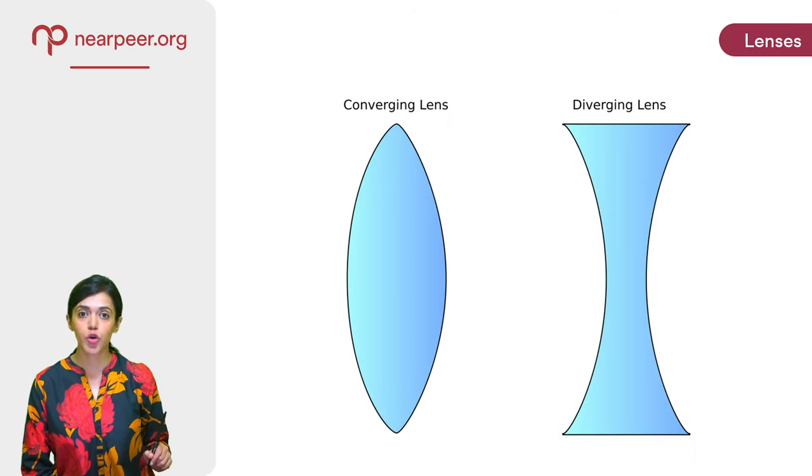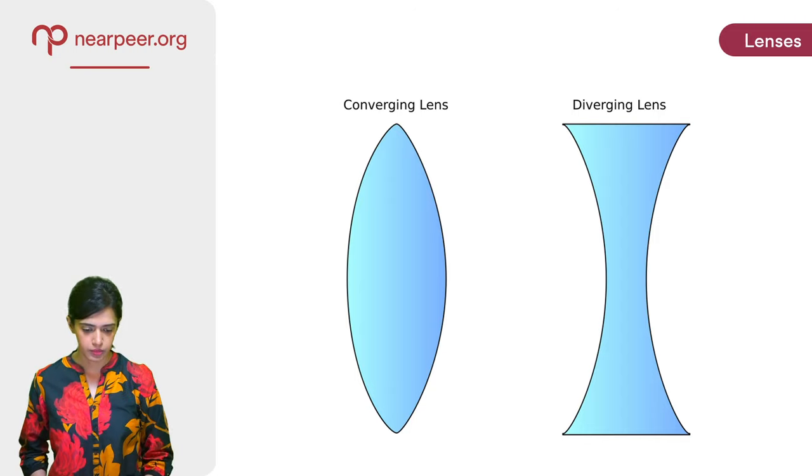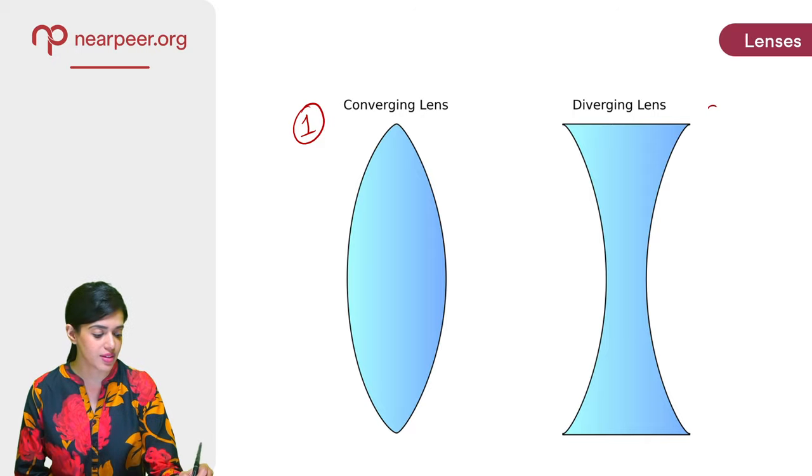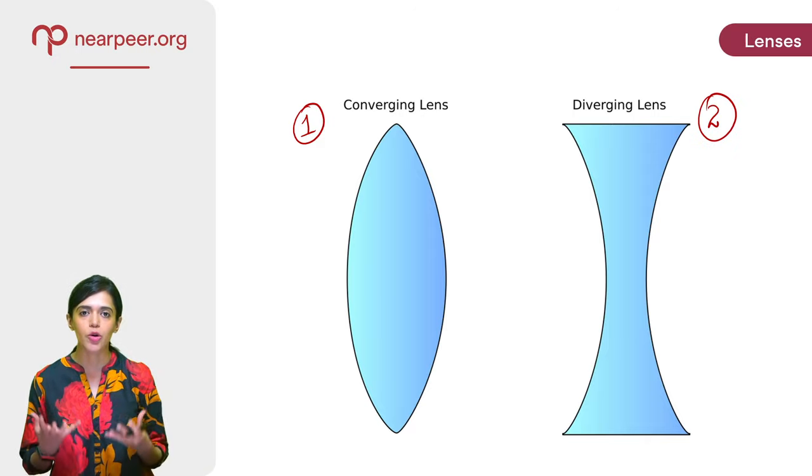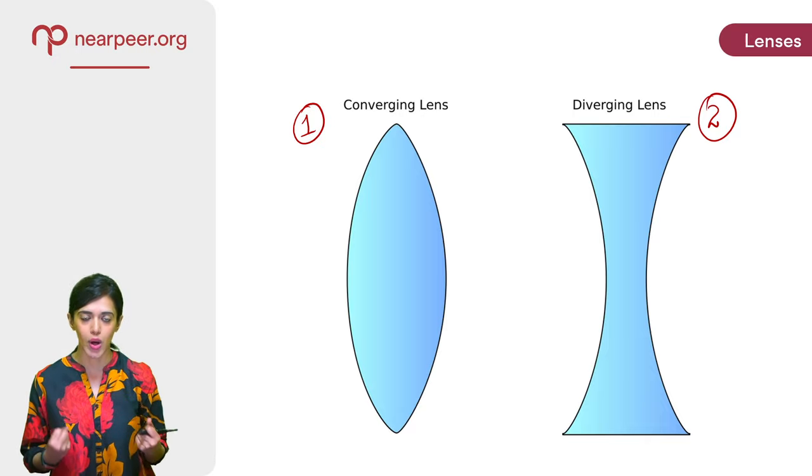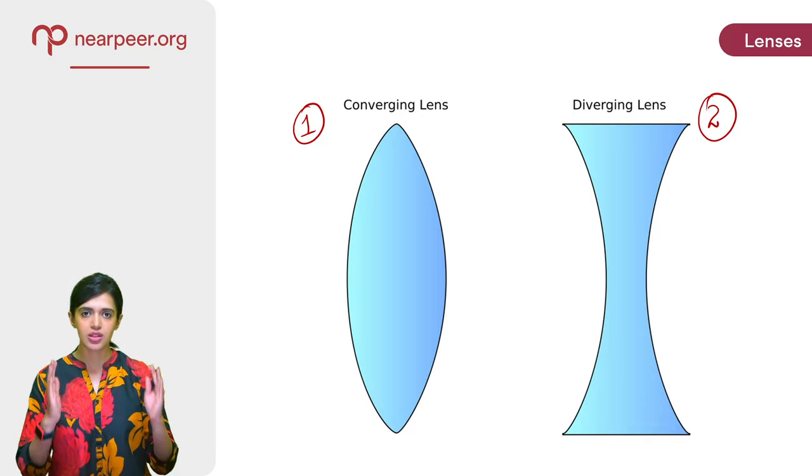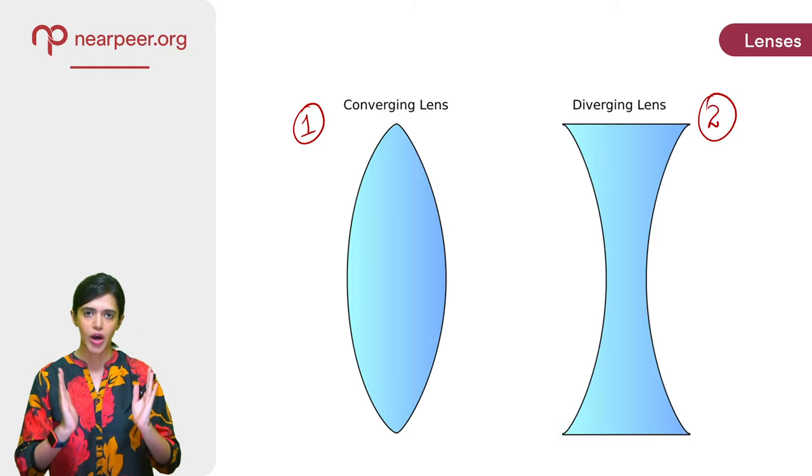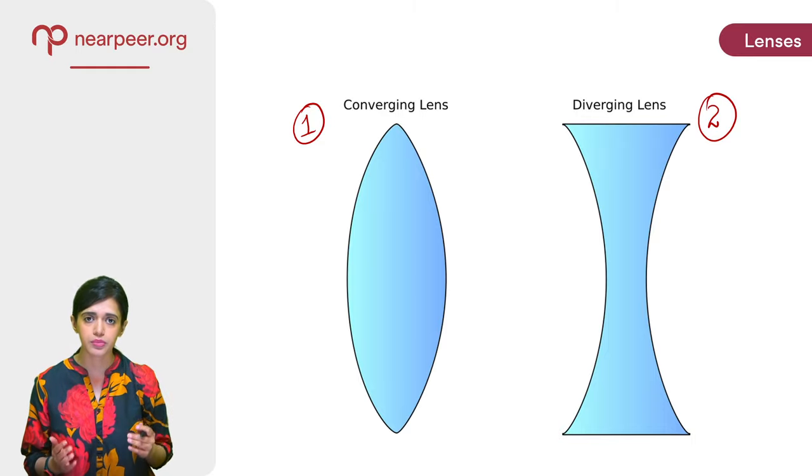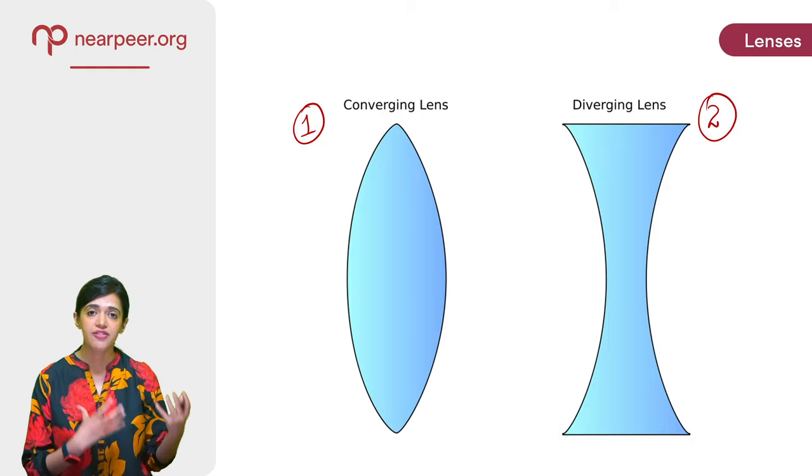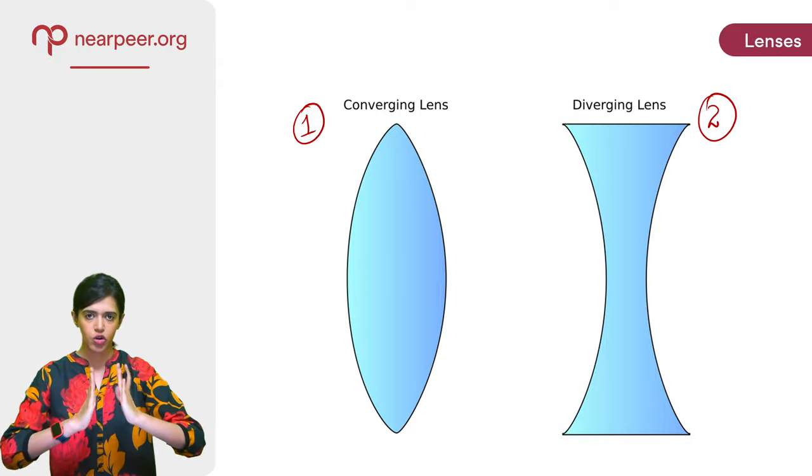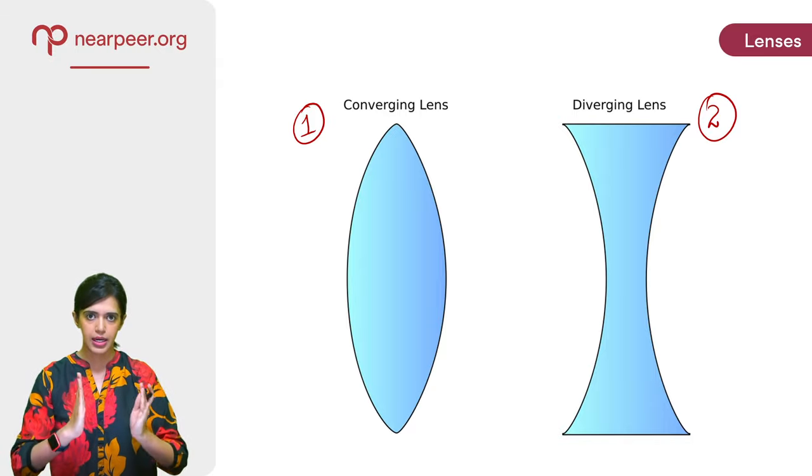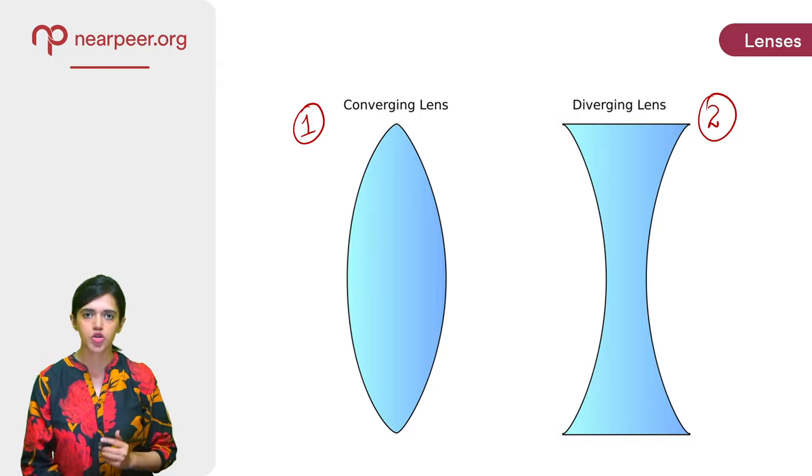Now I'm pretty sure most of you are familiar with these two types of lenses that you see on your screen right now. The first one is called a converging lens and the second one is called a diverging lens. So just by looking at these two lenses, how can we differentiate between them? A converging lens is one which is thicker in the middle and as you go towards the upper and lower edge it becomes thinner. Conversely, a diverging lens is one which is thin in the middle and as you go towards the extremities it becomes thicker towards the top and the bottom.